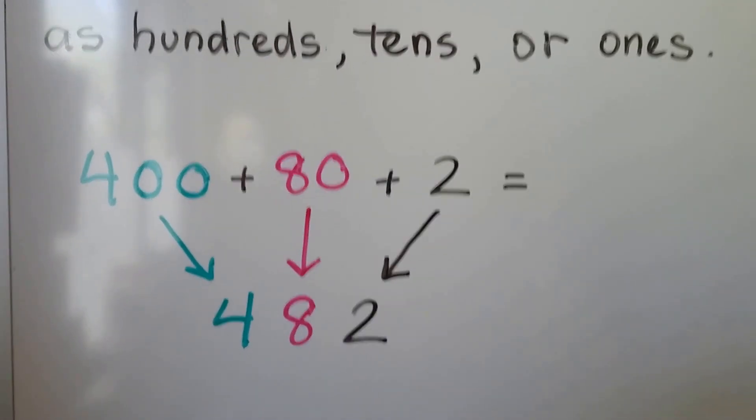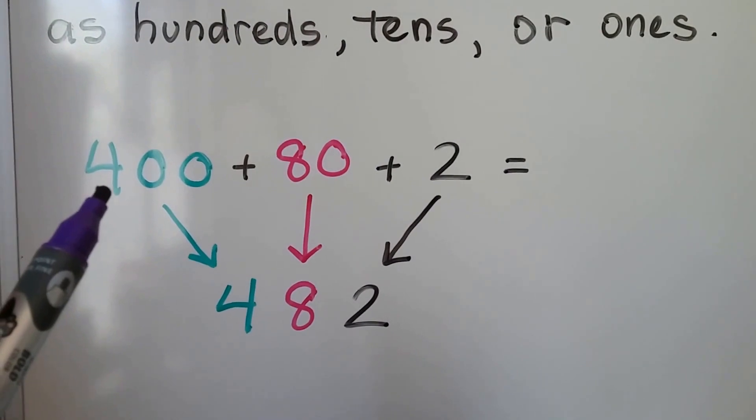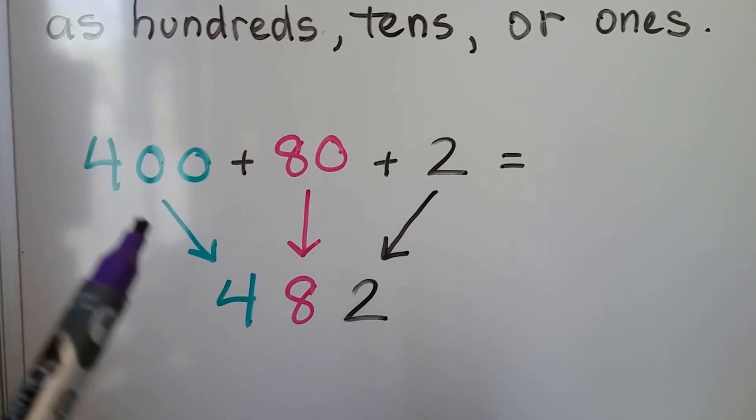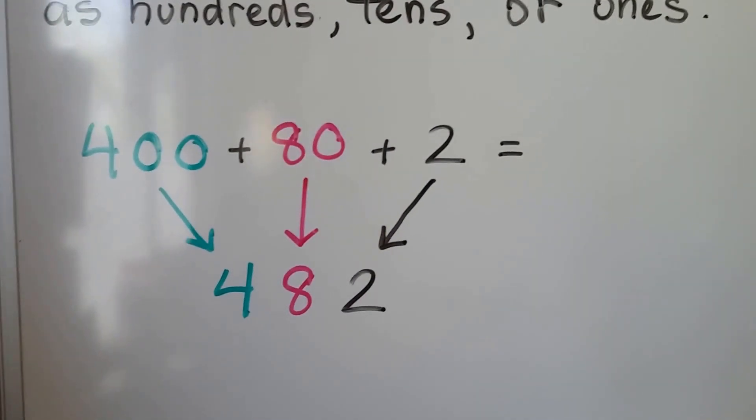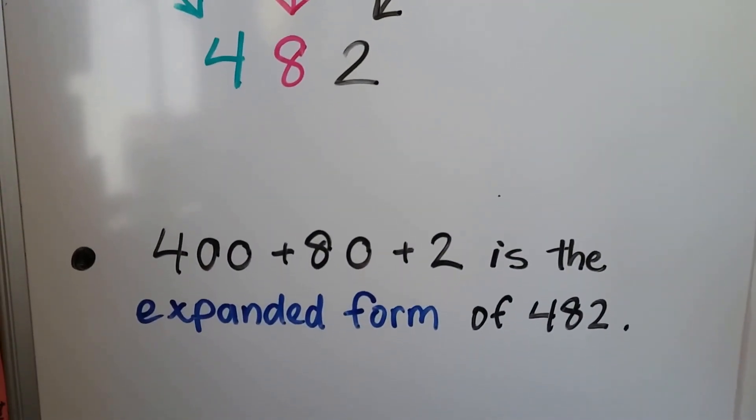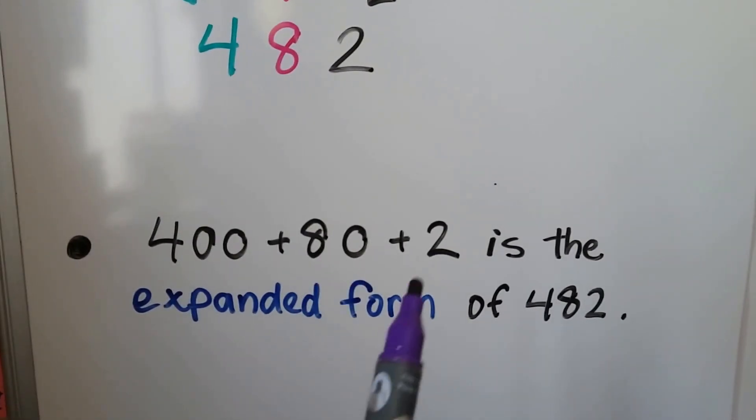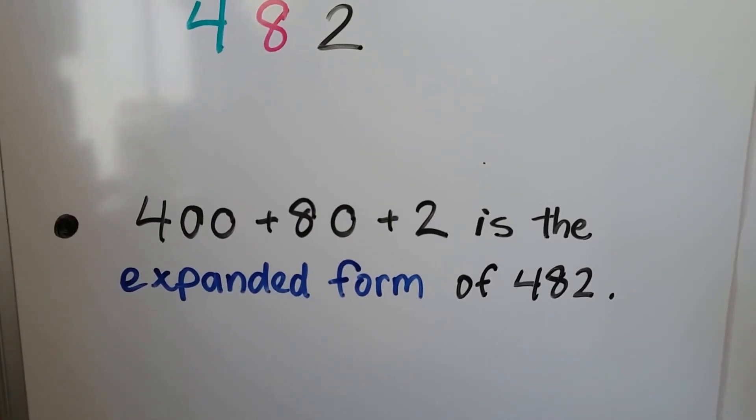When we take 482, we can represent it as 400 plus 80 plus 2. We've opened it up, haven't we? This is called the expanded form. 400 plus 80 plus 2 is the expanded form of 482.